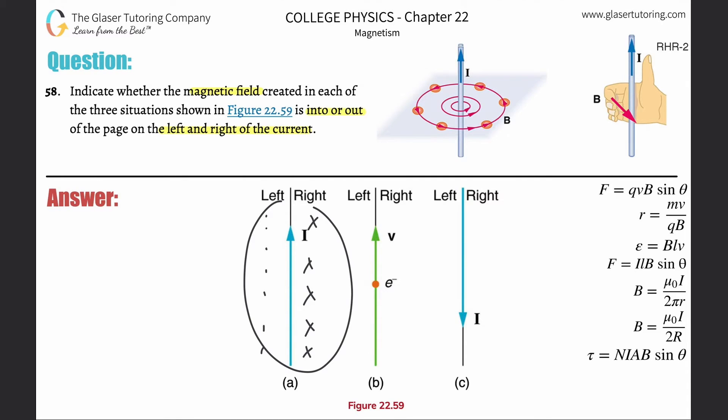So in other words, if you predicted the current would produce a magnetic field out of the page on the left and into the page on the right, then if the electron's moving it's going to be the opposite - into the page on the left and then out of the page on the right.